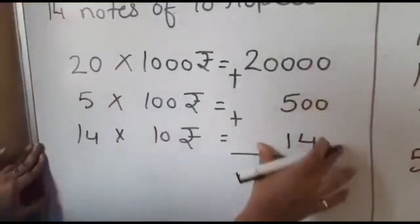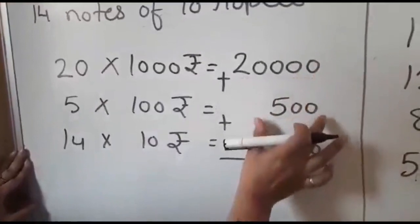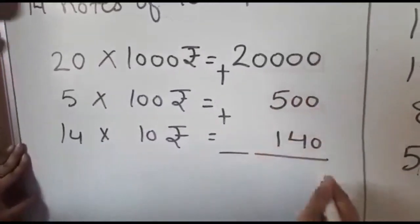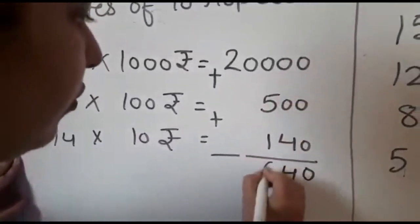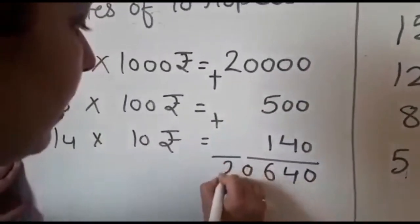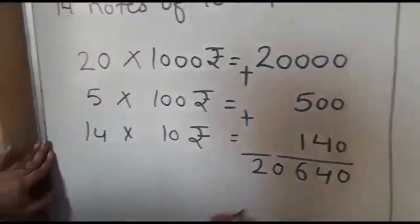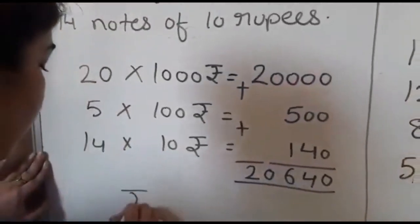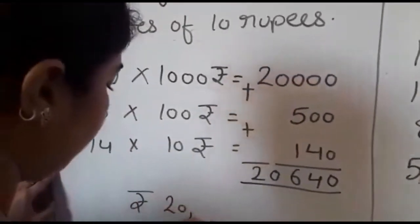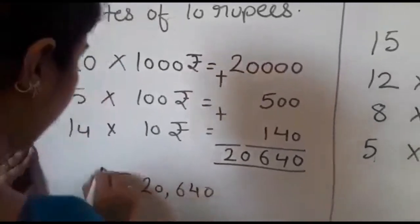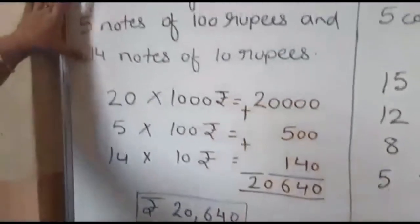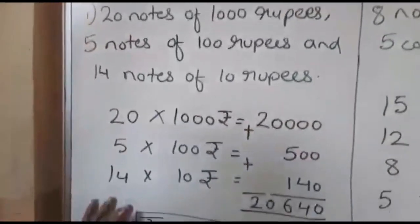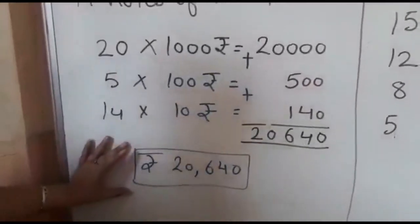Now when we add up these three: 20,000 + 500 + 140 comes to 20,640. So this is our total. They make total rupees 20,640. When we sum up these notes, our total will be 20,640 rupees.